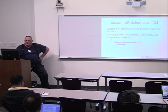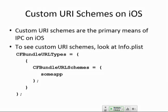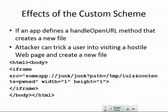iOS also has custom URI schemes. You'll see them in info.plist — for example, 'CFBundleURLSchemes' set to 'someapp.' This defines a handler. So an app defines a handler that opens a new file. You can trick someone into visiting a hostile web page, and this will create a file — for example, 'path=temp, content=zone' — if the app has the ability to create a file, and any app can make a file in a temp folder.